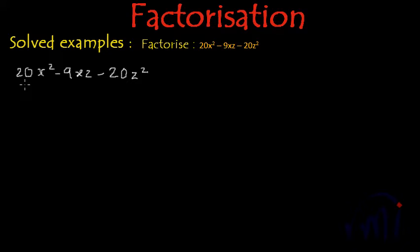So what is the first step? First step is I'll multiply this 20 to this 20 and then find the factors in such a way that I get minus 9. So 20 multiplied by minus 20 is equal to minus 400.